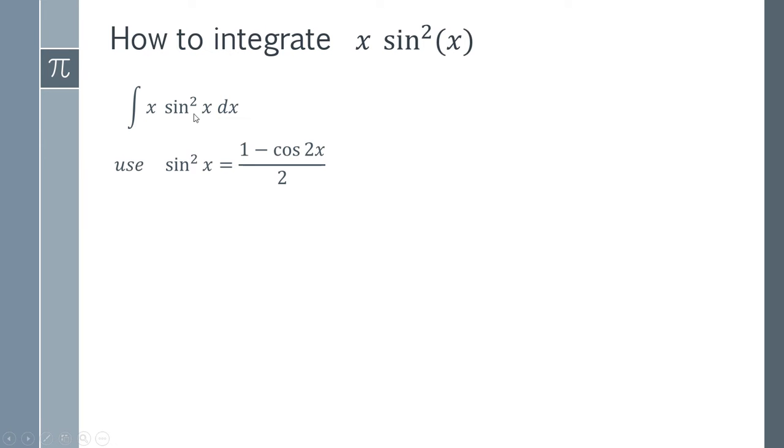What we can do is replace the sine squared x with this expression and we can of course take the 2 out to get a factor of a half. So I've just replaced the sine squared x with this expression here. I've got a factor of a half coming out there.